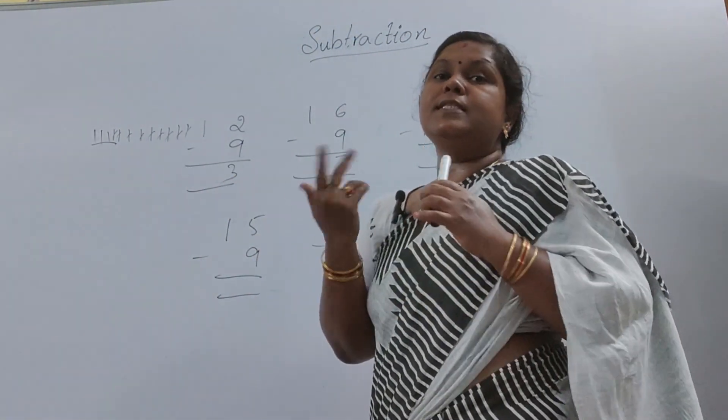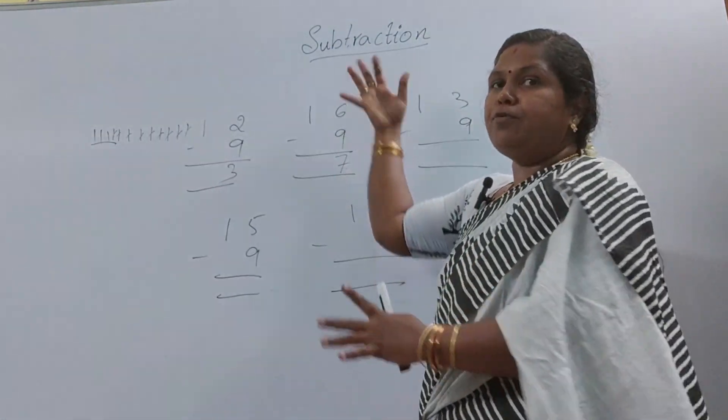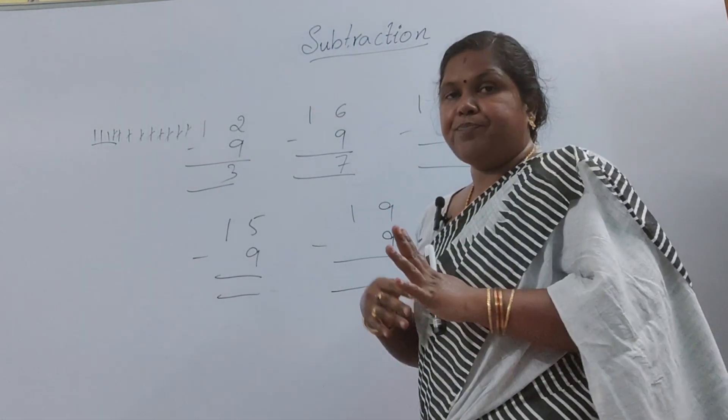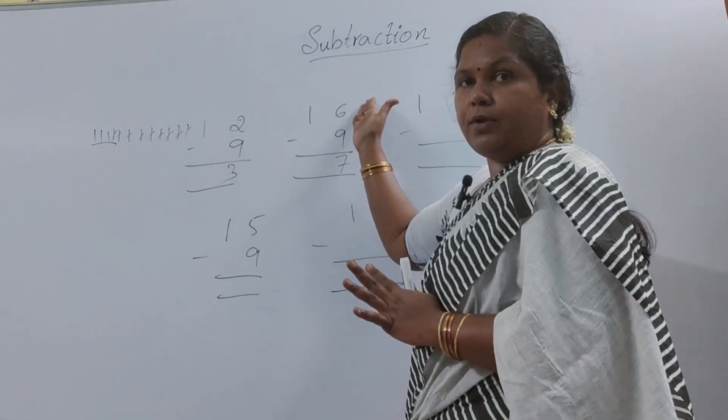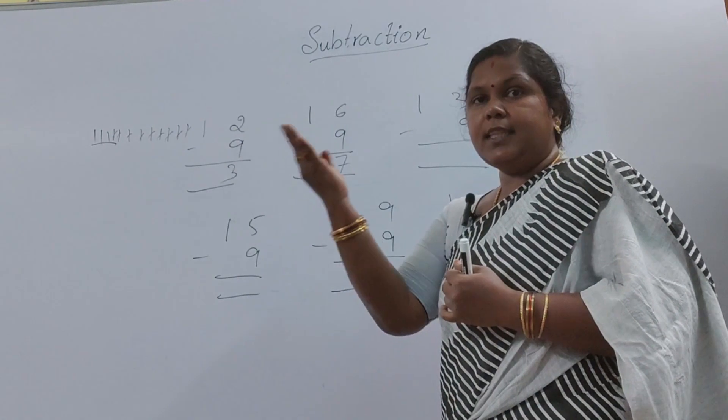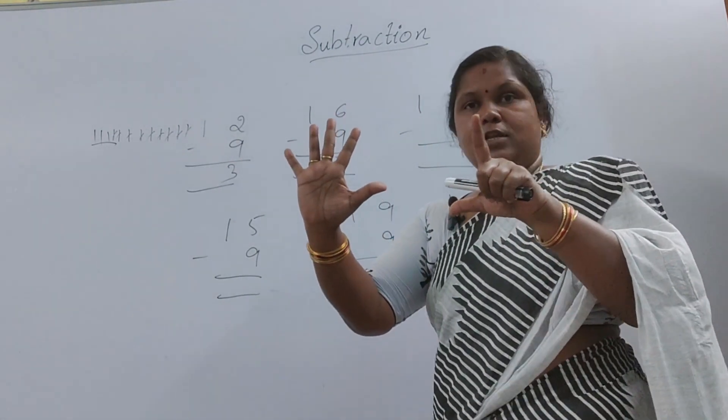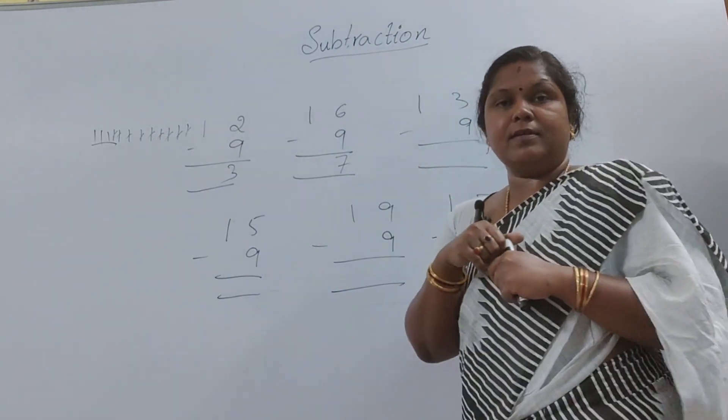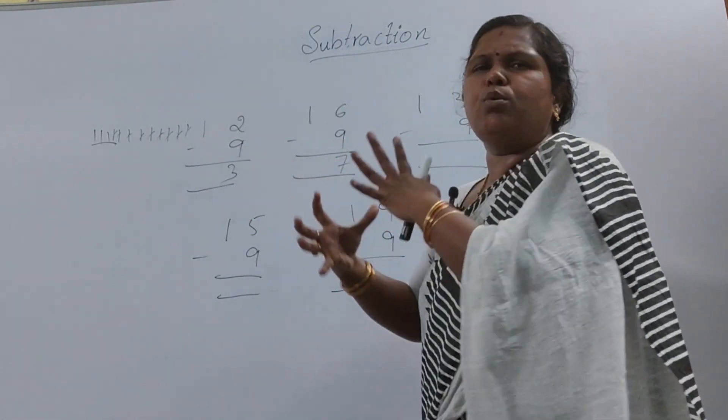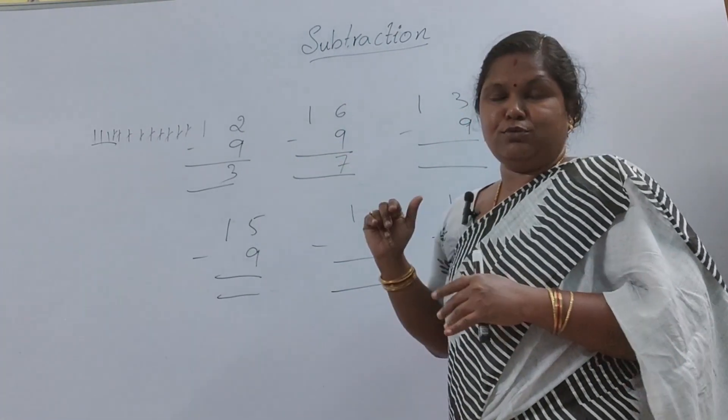Otherwise you will be doing with some other way, such as: see here 9 is there, up to 16 you will be counting in reverse way. We have to get 16, that's right. 9 after 10, 11, 12, 13, 14, 15, 16. How much did I get here? 7 I got. Answer is 7. See, instead of doing this long process within a fraction of second we can do this.